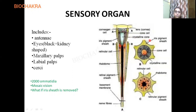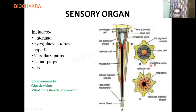Below the corneagen cells, a crystalline cone is present. It is transparent in nature. The crystalline cone is a transparent structure secreted by cone cells. Looking at the transverse section through the crystalline cone — that red-orange colored structure — it is surrounded by four cone cells. These cone cells are also called vitellae (v-i-t-r-e-double-l-a-e). This entire region — the lens, cornea, crystalline cone — forms the dioptrical or focus region.